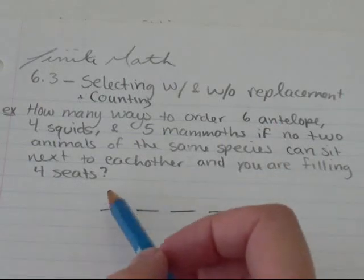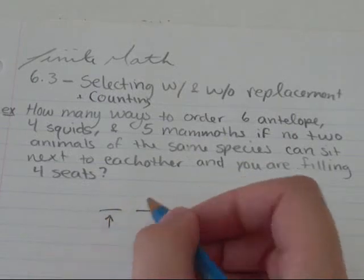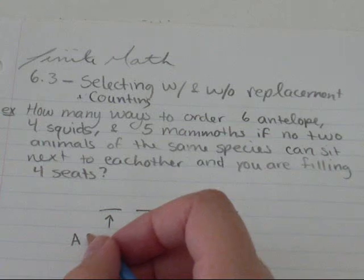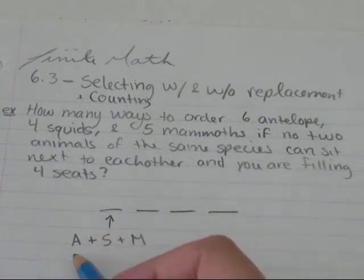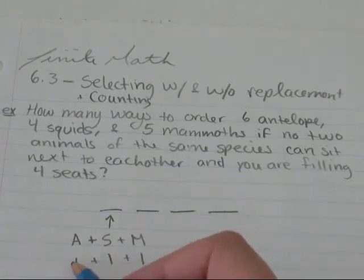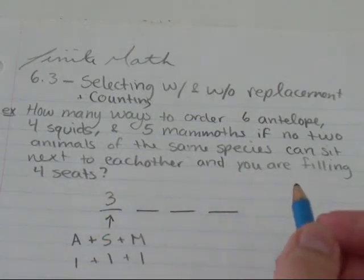So in the first seat, there's no animal yet to either side. So I can stick either an antelope or a squid or a mammoth. So I can stick one antelope or one squid or one mammoth. So one and one and one is three. I've got three choices for the first slot.